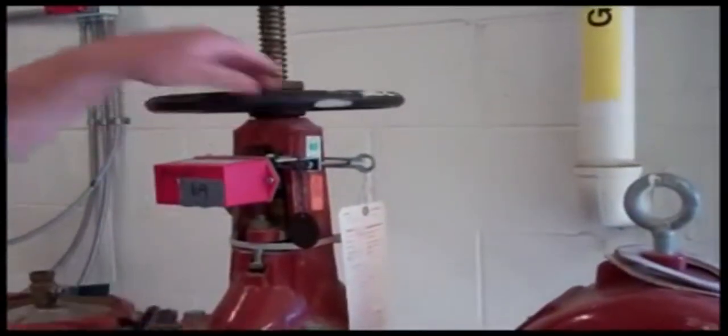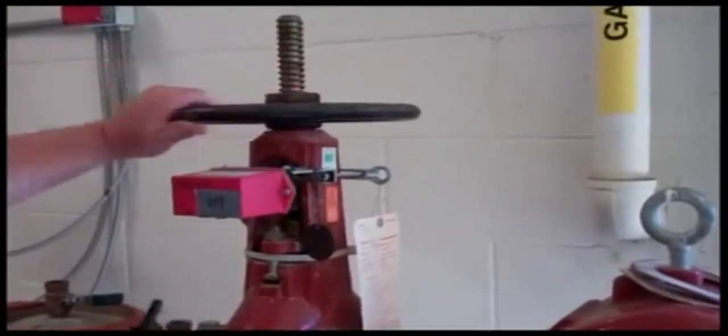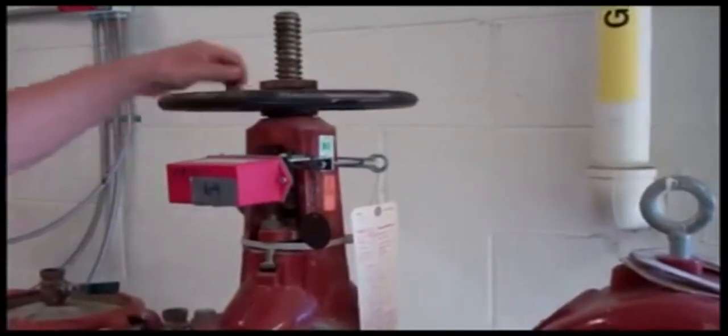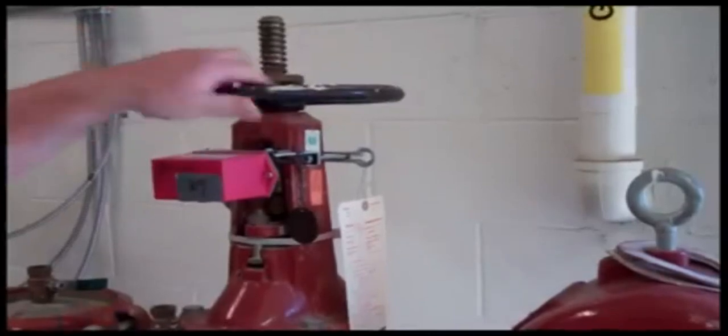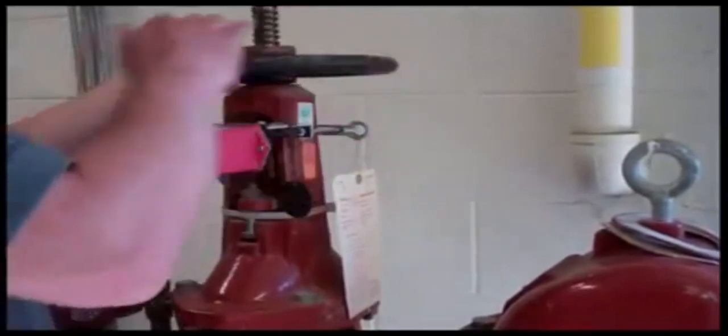Sprinkler tamper switches are designed to notify a fire alarm panel if a valve on a sprinkler alarm system is closed or opened. This is done so that facility managers can know if the sprinkler system has been impaired by having its water supply shut off. These devices are tested by fully exercising the valve through its full range of motion.